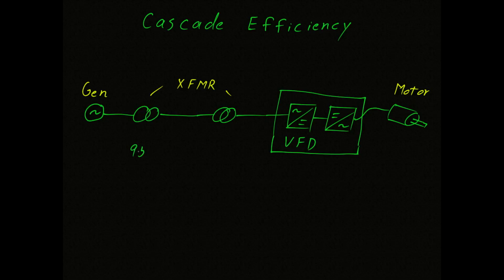Now that we have our cascade of equipment, we can record the efficiencies of the individual machines. We see the transformers are about 95% efficient. The variable frequency drive is somewhere around 92, and the motor itself is at 93% efficient.